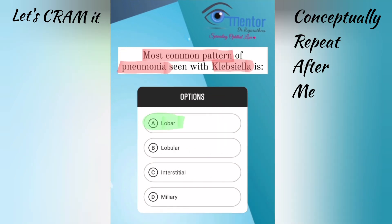Third question is about patterns of pneumonia. We have three patterns: lobar, lobular, and interstitial. Lobar damages the air spaces, so it is an air space disease. Lobular damages the terminal bronchioles. Interstitial affects type 1 pneumocytes. Remember lobar, lobular, and interstitial as A, B, C — lobar: airway, lobular: bronchioles, interstitial: cells.